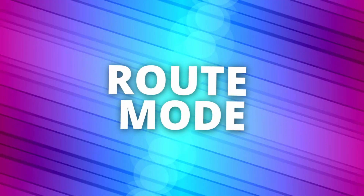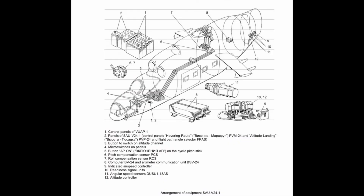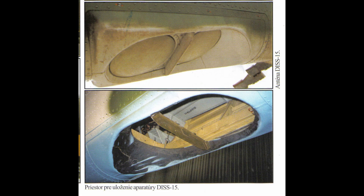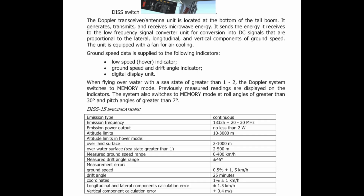Route mode. The route autopilot and hover hold use a portion of the autopilot system called the trajectory system and thus operate in similar ways. Since both use the Doppler system, if your Doppler system is not yet ready — it has a three-minute warm-up — or if you exceed the seven-degree pitch limits or 30-degree roll limits of the Doppler system, they will not turn on.